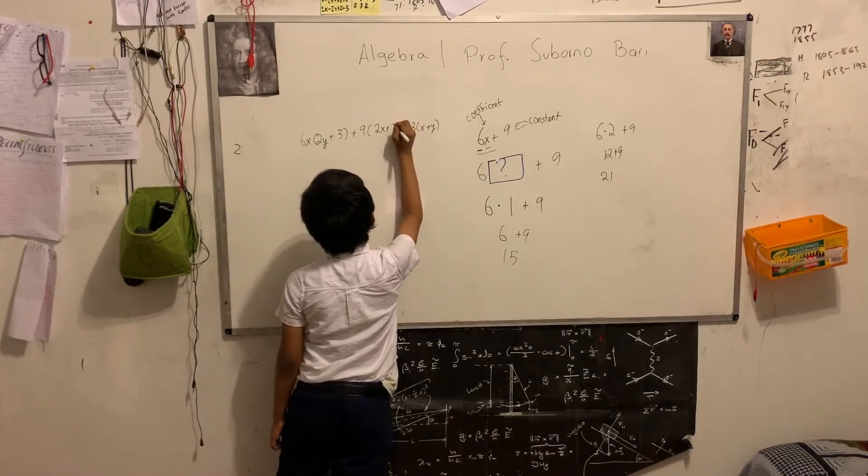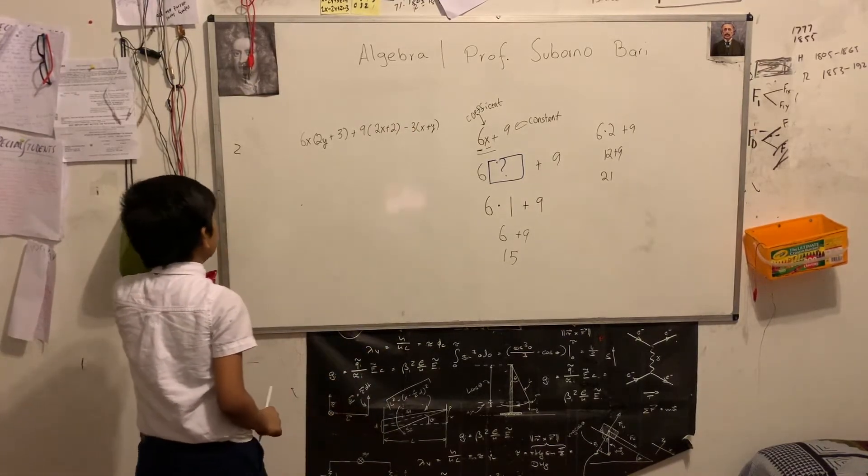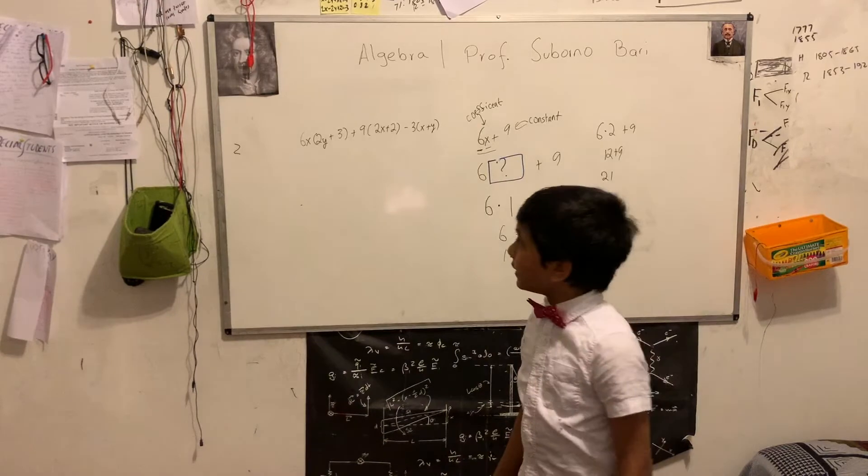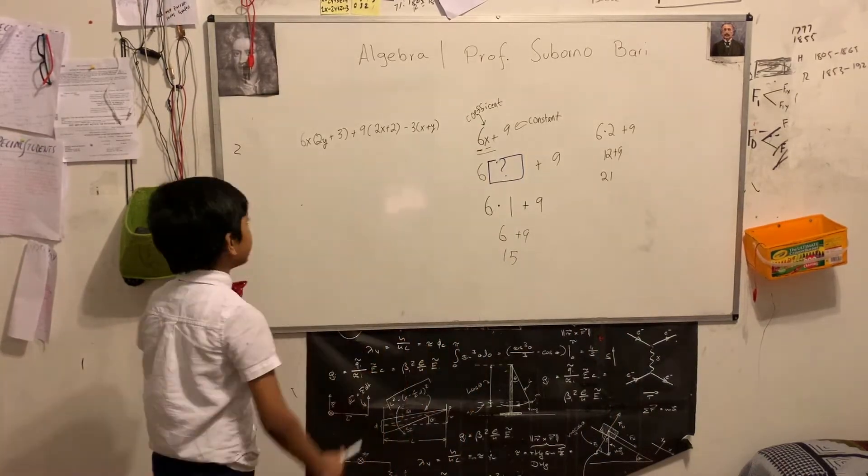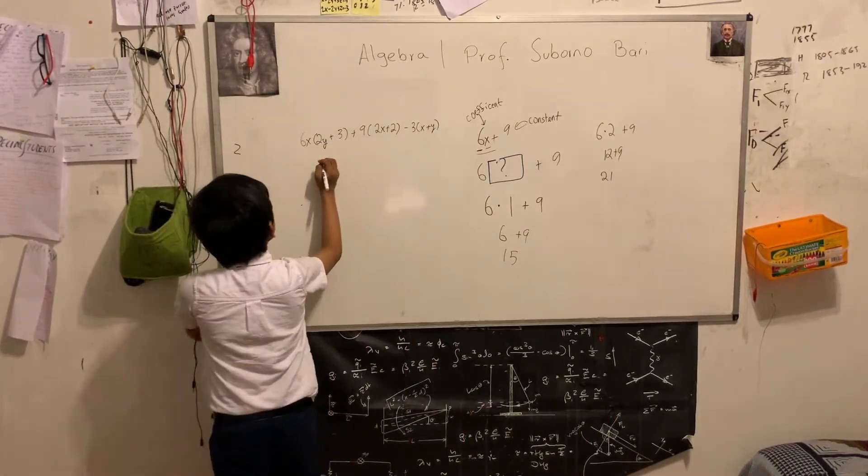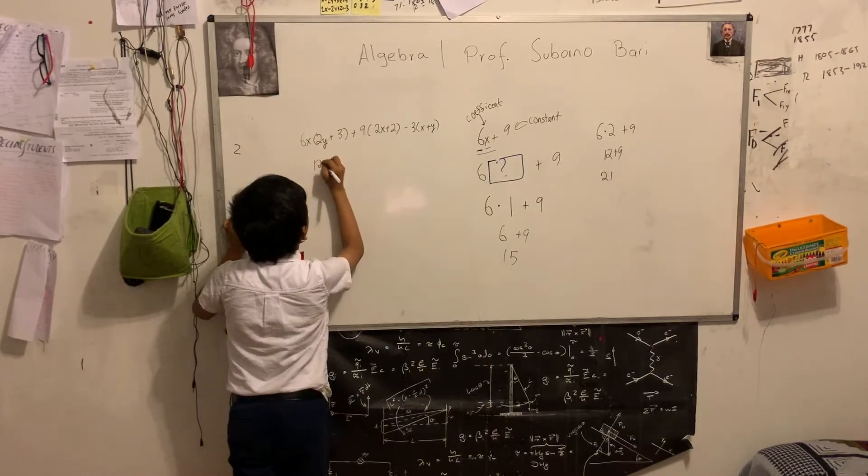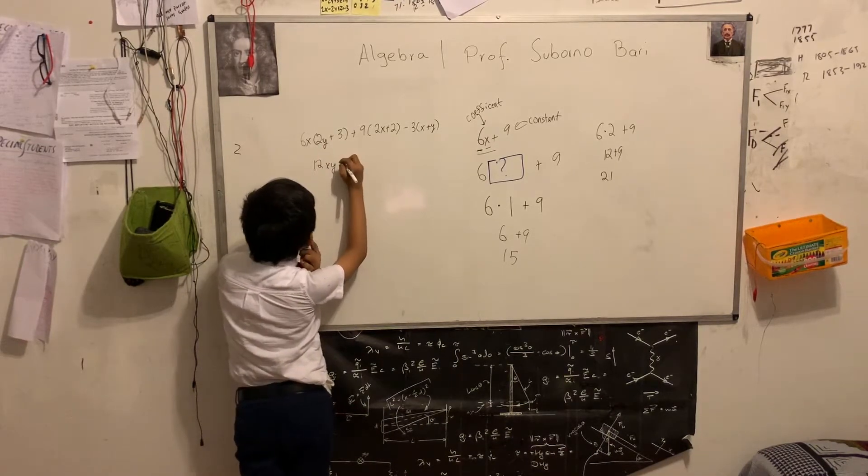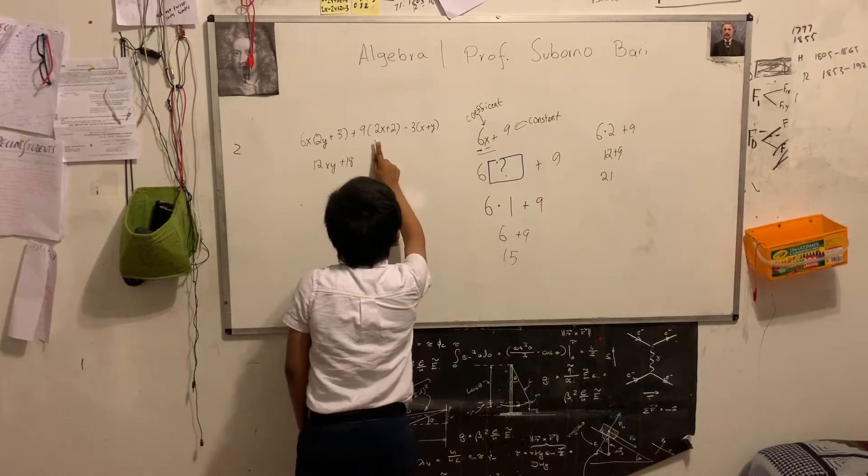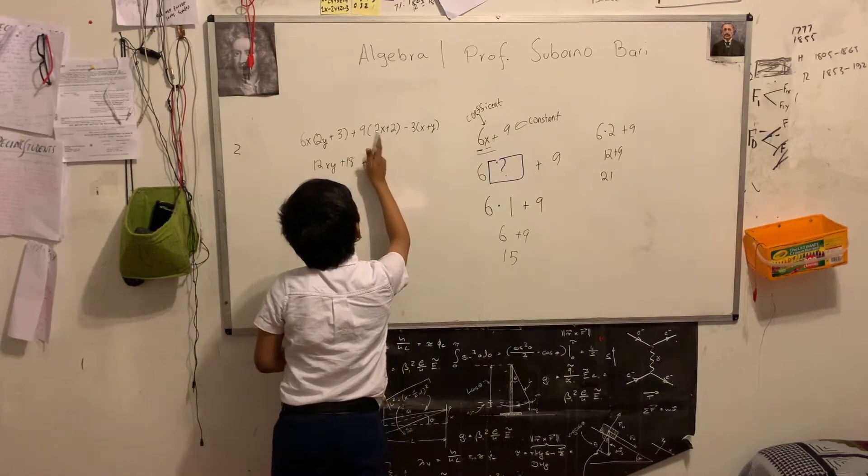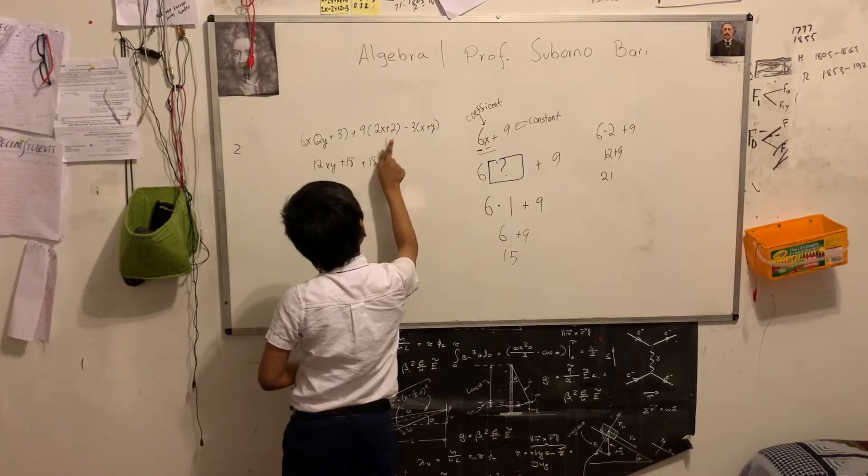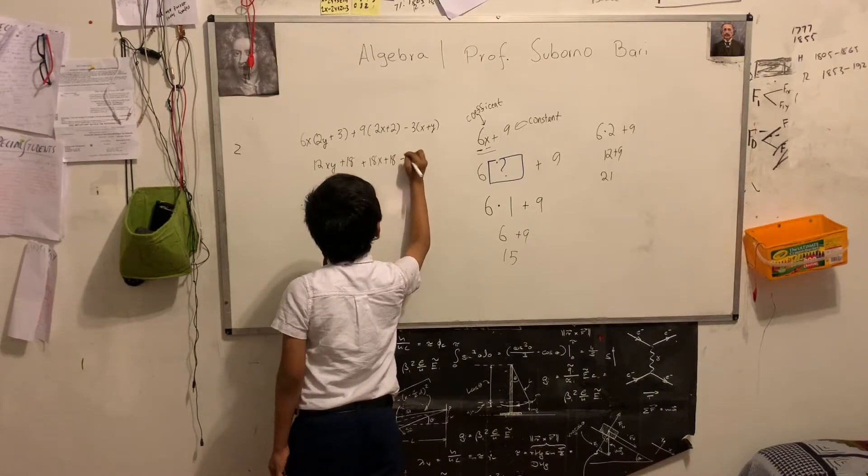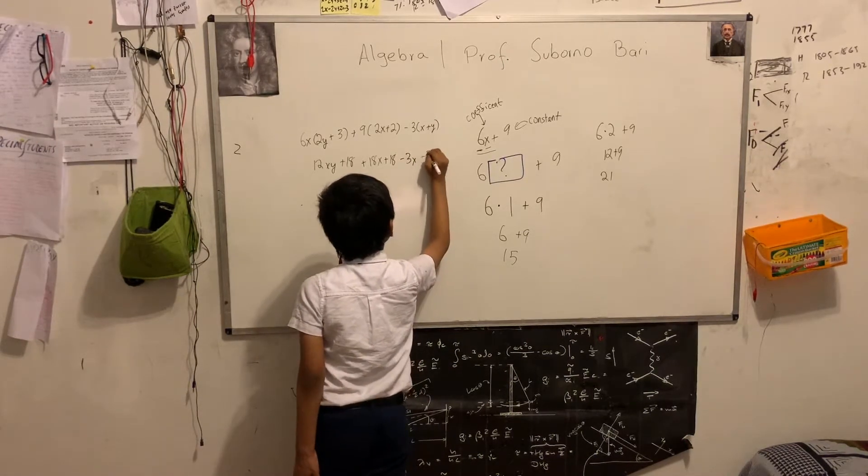How do we simplify this nightmare of an equation? Let me just vary it a little bit. So how do we simplify this? Well, first of all, we can use our beloved distributive property to our advantage. 6x times 2y plus 3 is going to be 12xy. 6 times 2 is 12. x times y is xy. And then 6x times 3 is 18x. And then 9 times 2x is 18x. And 9 times 2 is 18. And then minus 3 times x minus 3x. Minus 3 times y minus 3y.